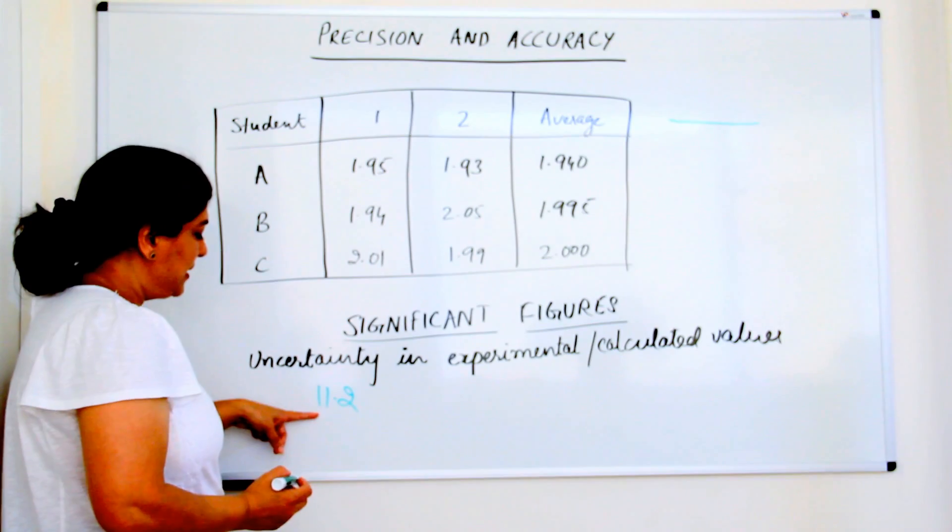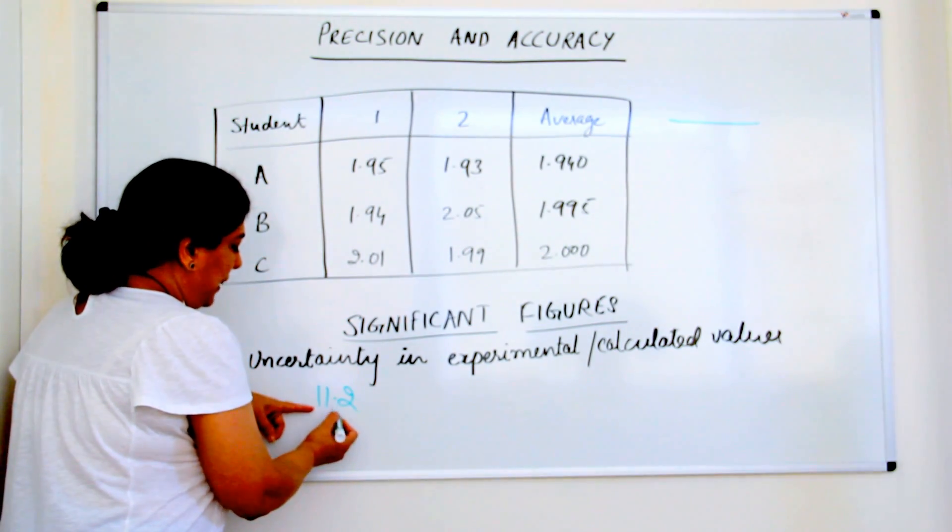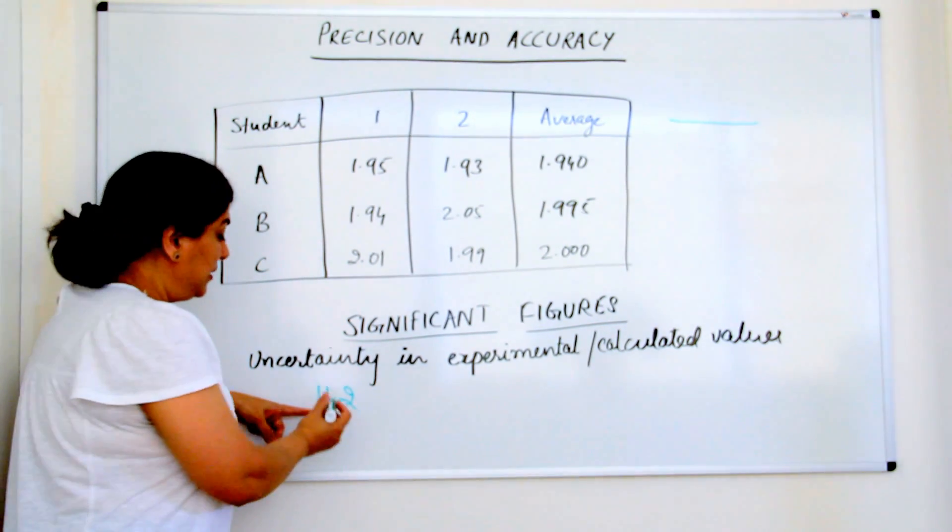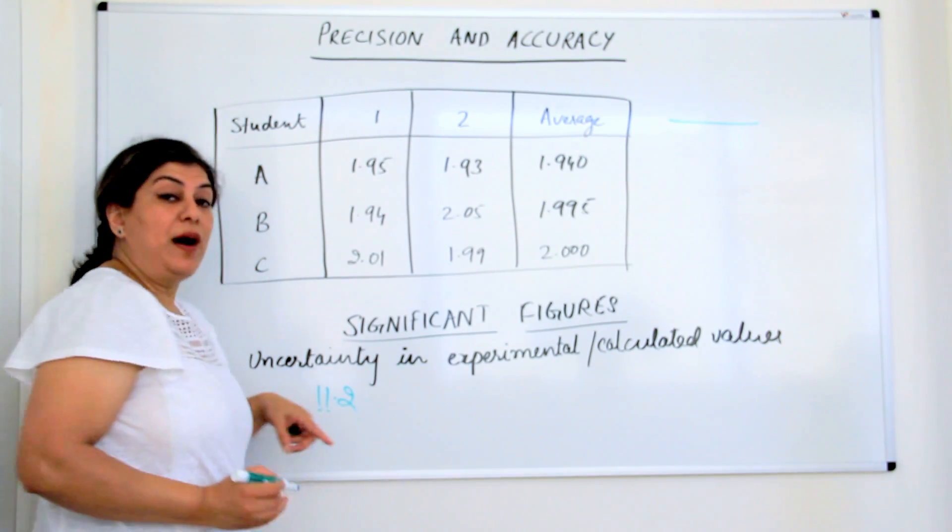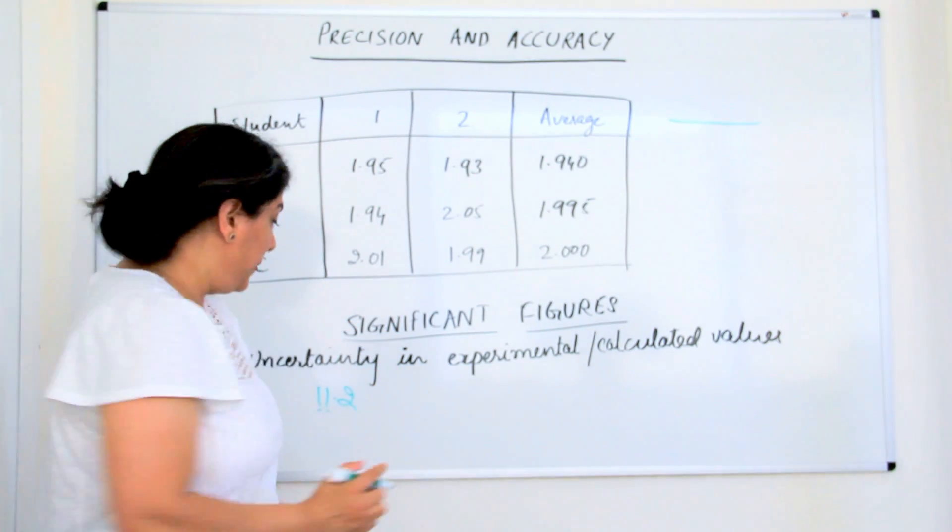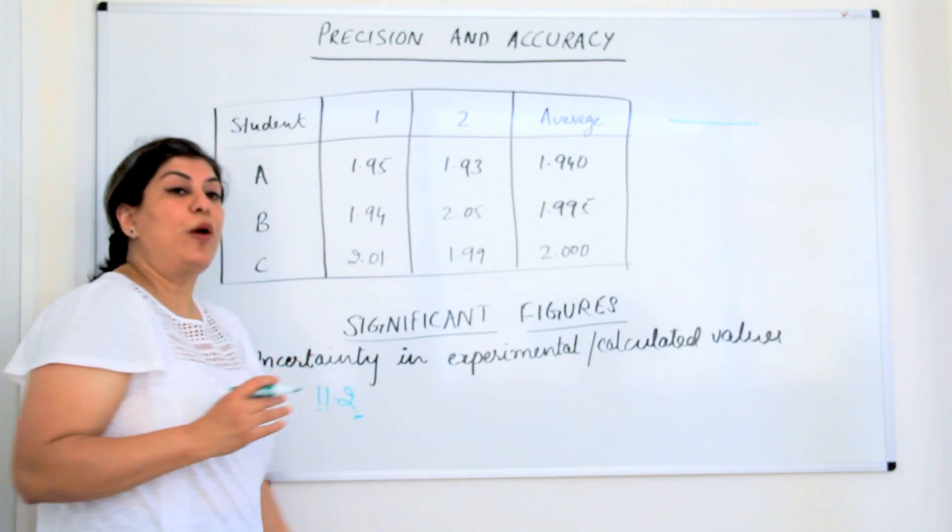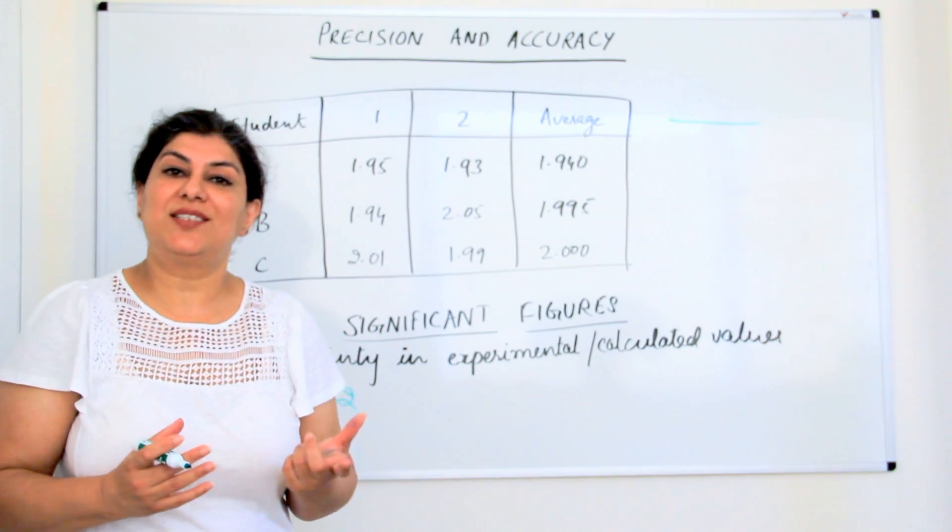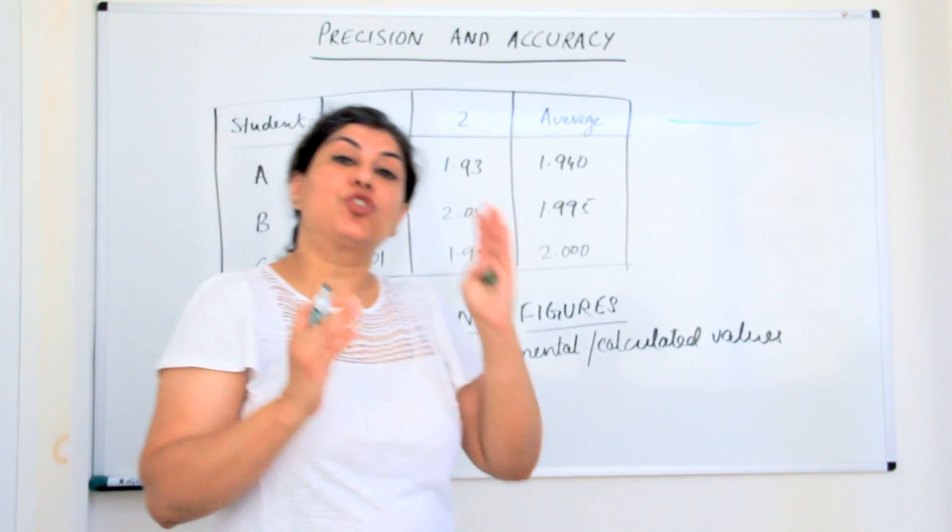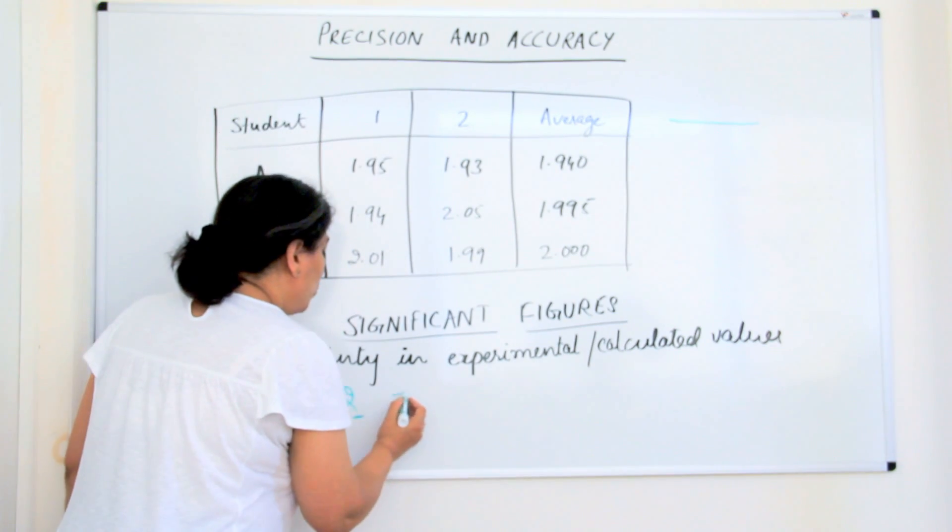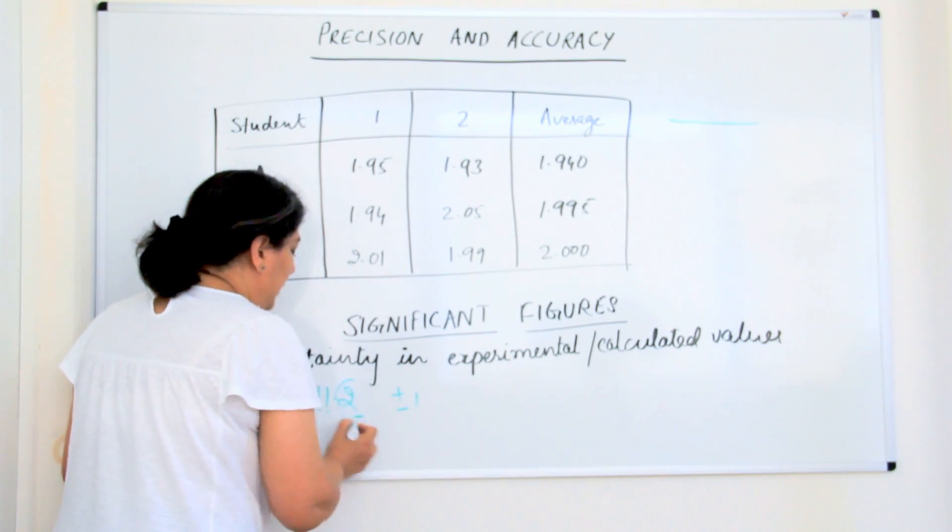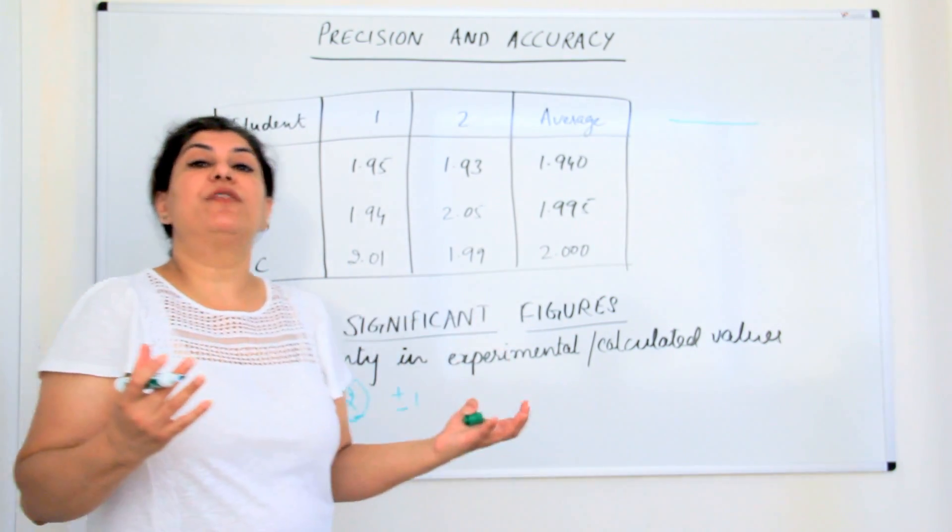Significant figures have, like this has 3 significant figures. In the 3 significant figures, 2 of them are absolutely correct. But the third, the last value, usually is uncertain.